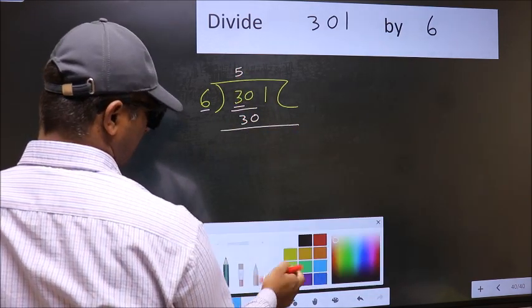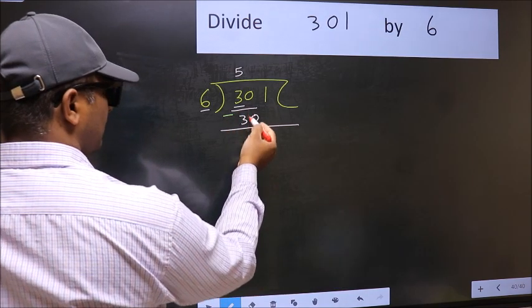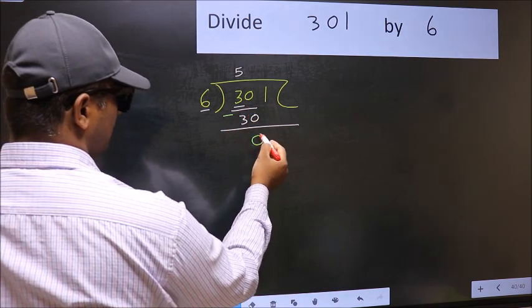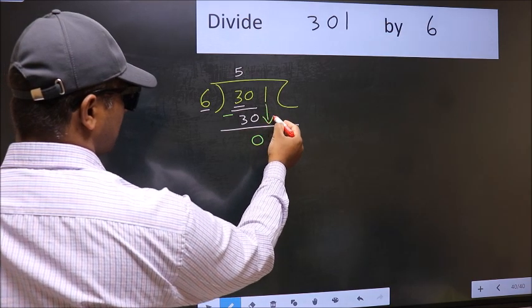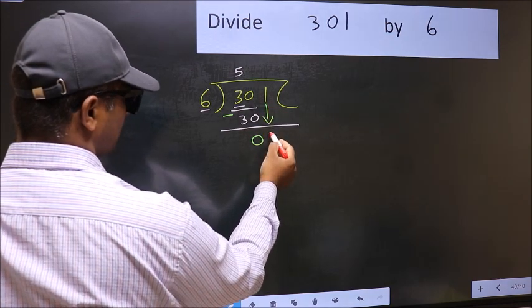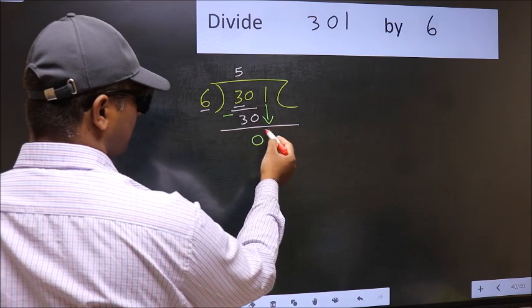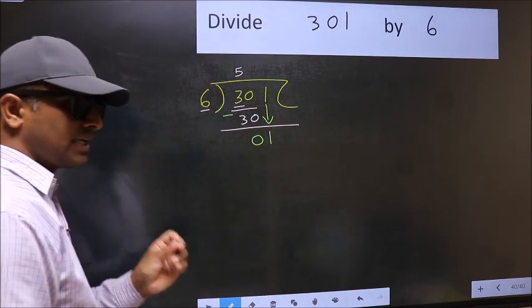Now you should subtract. 30 minus 30 is 0. After this, bring down the beside number. So 1 down. After this step, the mistake happens.